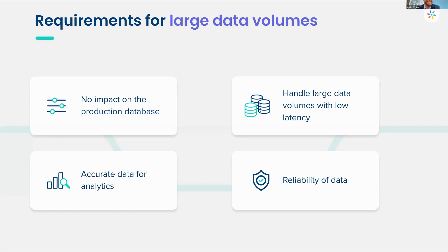There's a balance to strike when working with production databases. Accurate data for analytics is essential — you want to make sure the data you're extracting and reporting on is correct and complete. You also need reliability: the data must be accurate, available around the clock, and complete. As you scale up and bring in more data, it becomes more difficult to wrangle and ensure that data remains reliable.